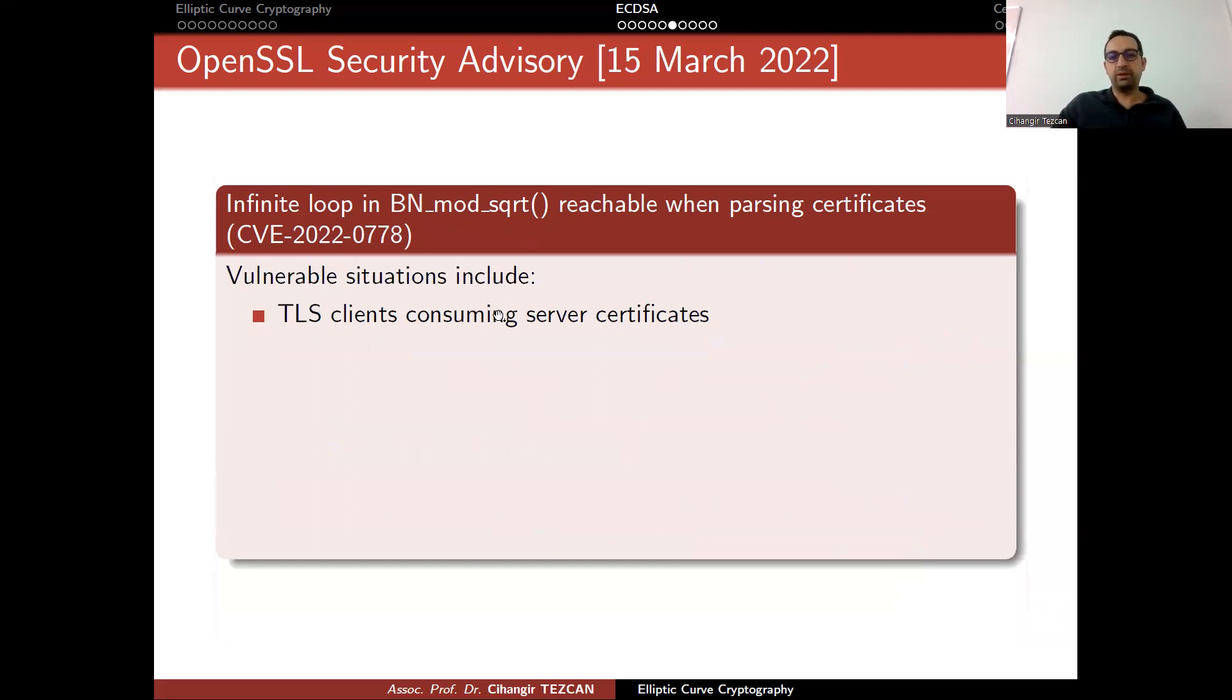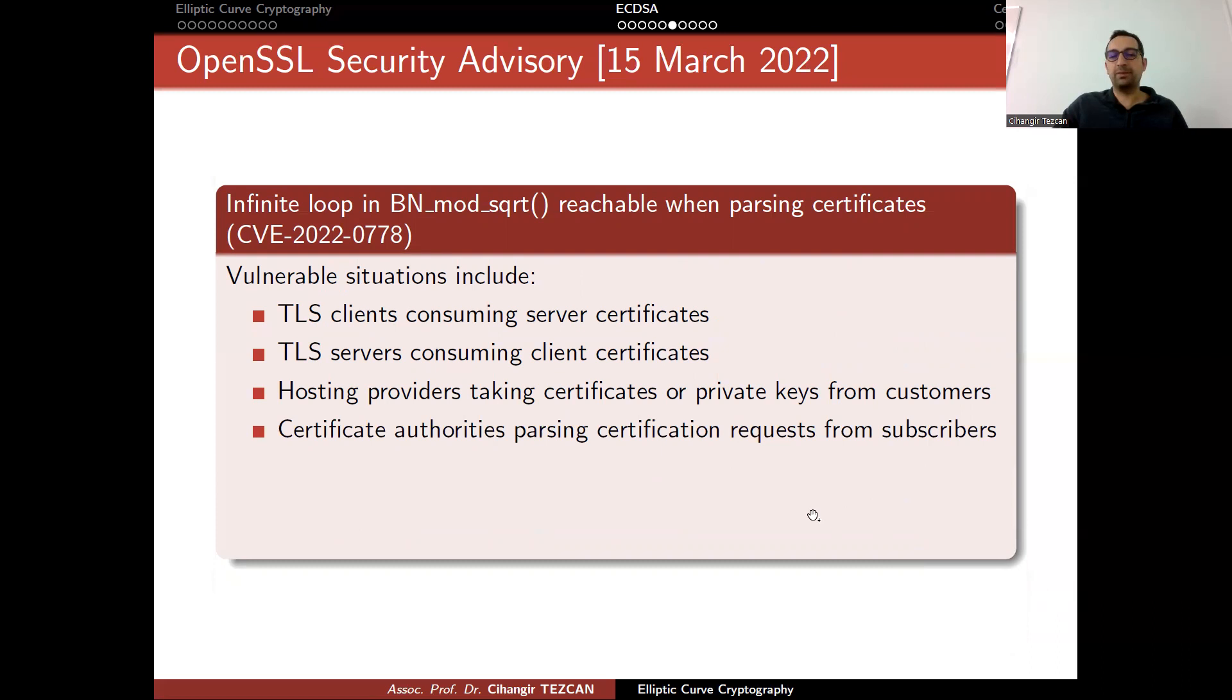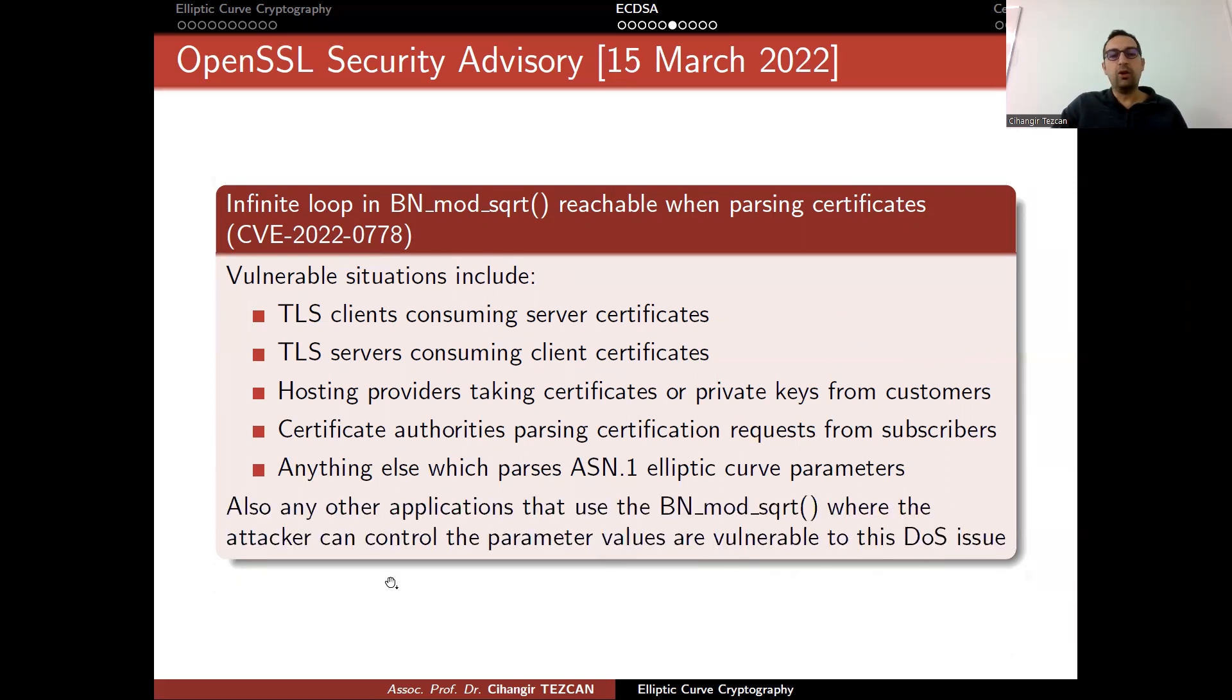In order to summarize, vulnerable situations include TLS clients consuming certificates, TLS servers consuming client certificates, hosting providers taking certificates or private keys from customers, certificate authorities parsing certification requests from subscribers, anything which parses ASN.1 elliptic curve parameters, this is just a kind of an encoding. Also, any other application that uses this function where the attacker can control the parameter values are vulnerable to this denial of service attack.